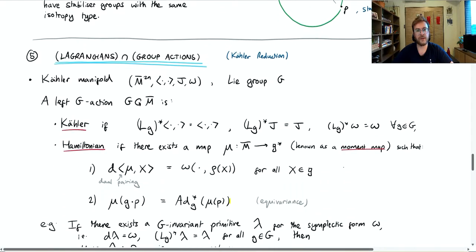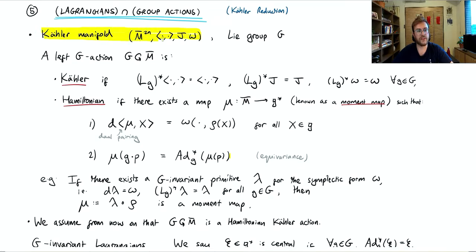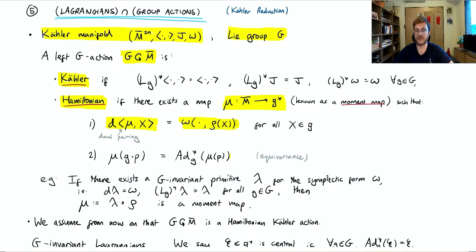Moving on to the implications for Lagrangians: we can't just have any group actions, we need group actions that preserve all our structures. The setup is that we have a Kähler manifold with Riemannian, almost complex, and Kähler structures, a Lie group G, and an action of G on M-bar that is Kähler — meaning it preserves the metric, the almost complex structure, and the symplectic form. We also require it to be Hamiltonian, meaning there exists a moment map μ such that the exterior derivative of μ paired with a Lie algebra element X equals the interior product of the infinitesimal action of X with the symplectic form.